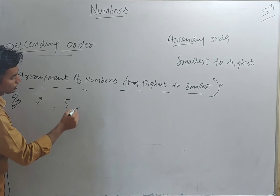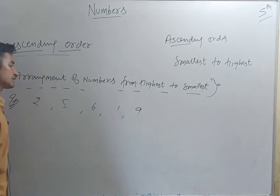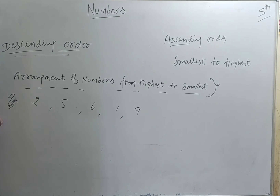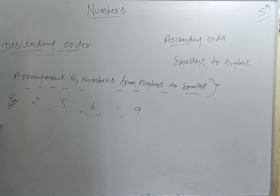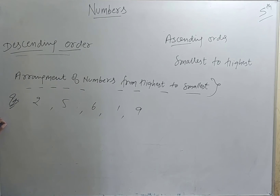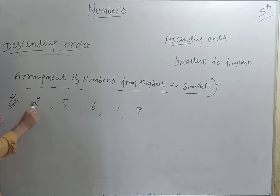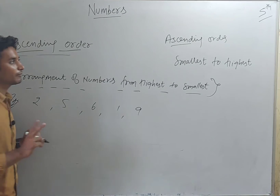Here we have the numbers 2, 5, 6, 1, 9. We have to arrange these in descending order. According to the definition, descending order means arrangement of numbers from highest to smallest. So we need to find the highest number as well as the smallest number and compare them.